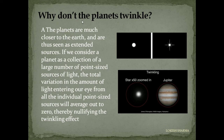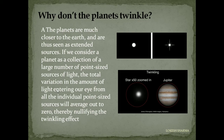Why don't planets twinkle? Stars appear to twinkle while planets appear steady. Planets are very close to the Earth and so they appear very large with respect to stars. Hence a planet can be considered as an extended source of light — a collection of a large number of point-sized sources of light. The total variation in the amount of light entering our eye from all the individual point-sized sources will average out to zero, thereby nullifying the twinkling effect. That is why planets do not twinkle.